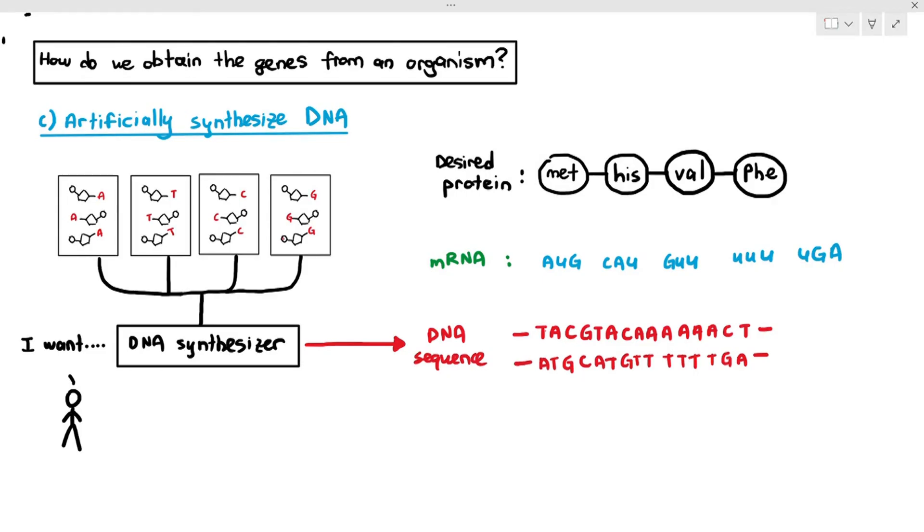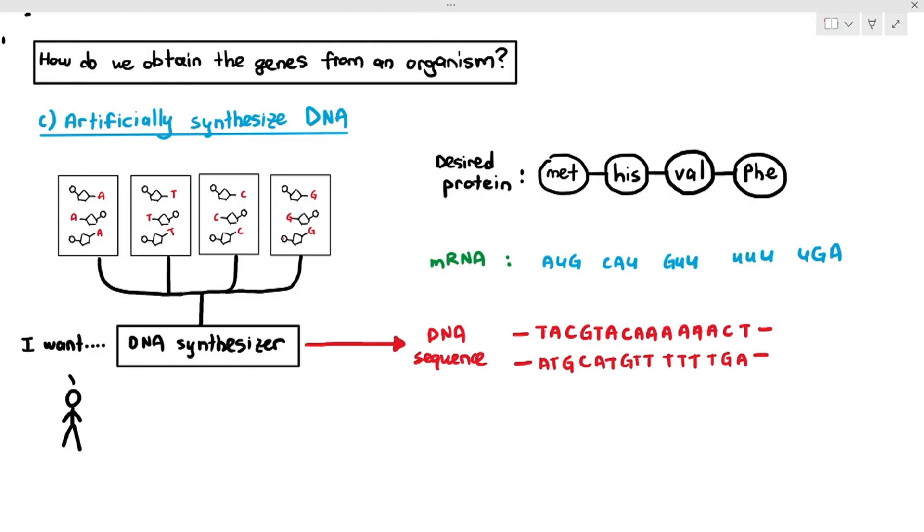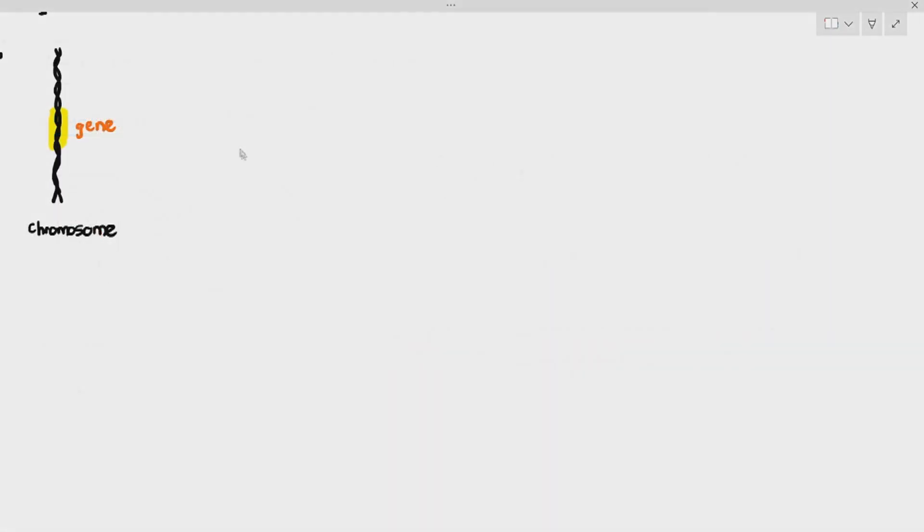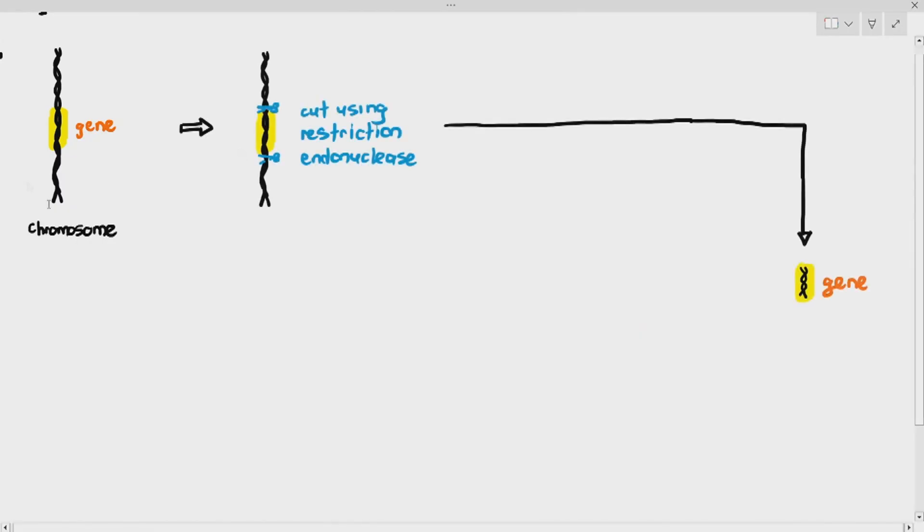So, this is how we can also artificially synthesize DNA or genes. So, these are the ways that you can obtain the gene from the organism. The first most common one that they will do is they will use the restriction endonuclease to cut the DNA slightly above the gene and below the gene in this diagram here to obtain it.